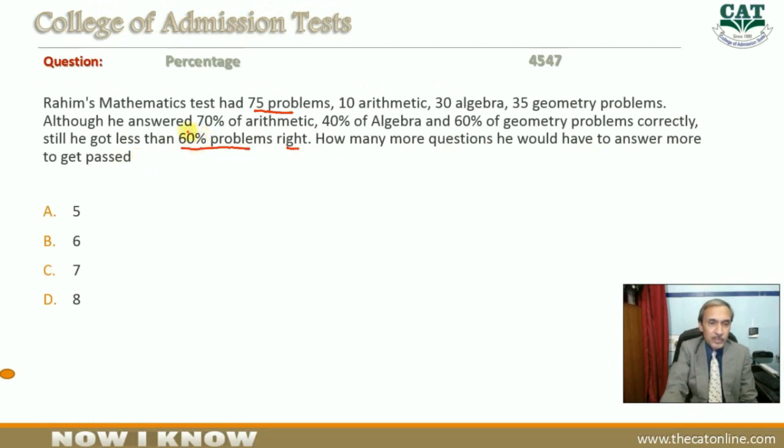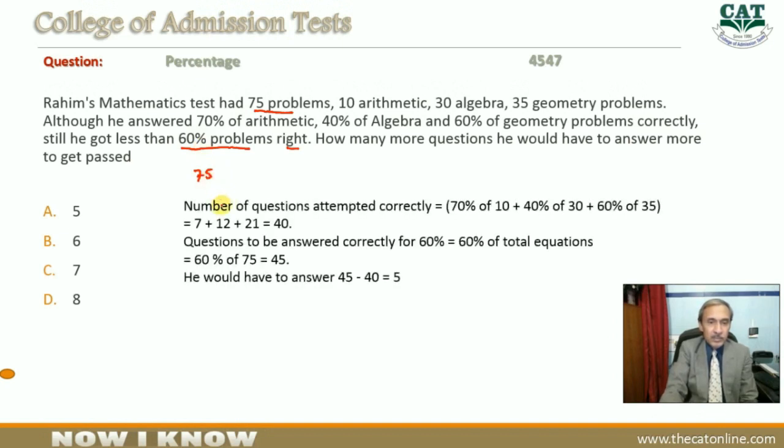To reach 60%, how many more questions should he answer correctly? Total questions are 75. So the number of questions attempted correctly would be 70% of 10, because 75 total problems includes 70% of arithmetic and there are 10 arithmetic questions.